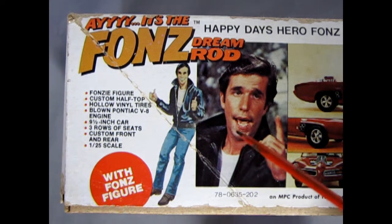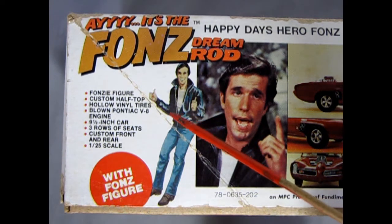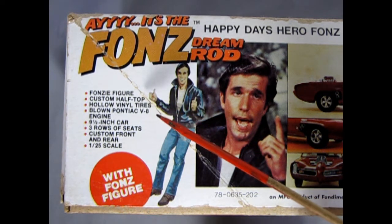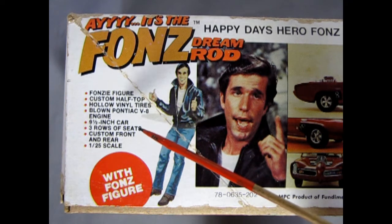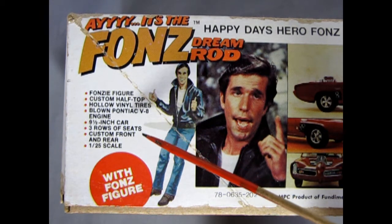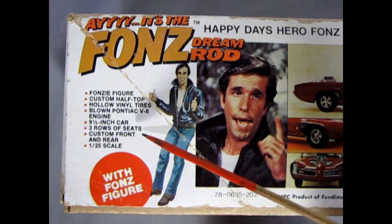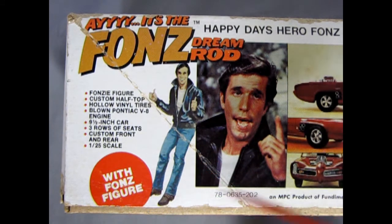Here we have what's on the side of the box: you get a Fonzie figure, a custom half top, hollow vinyl tires, a blown Pontiac V8 engine. The model is nine and a half inches long, it has three rows of seats, custom front and rear, and it's 1/25th scale.